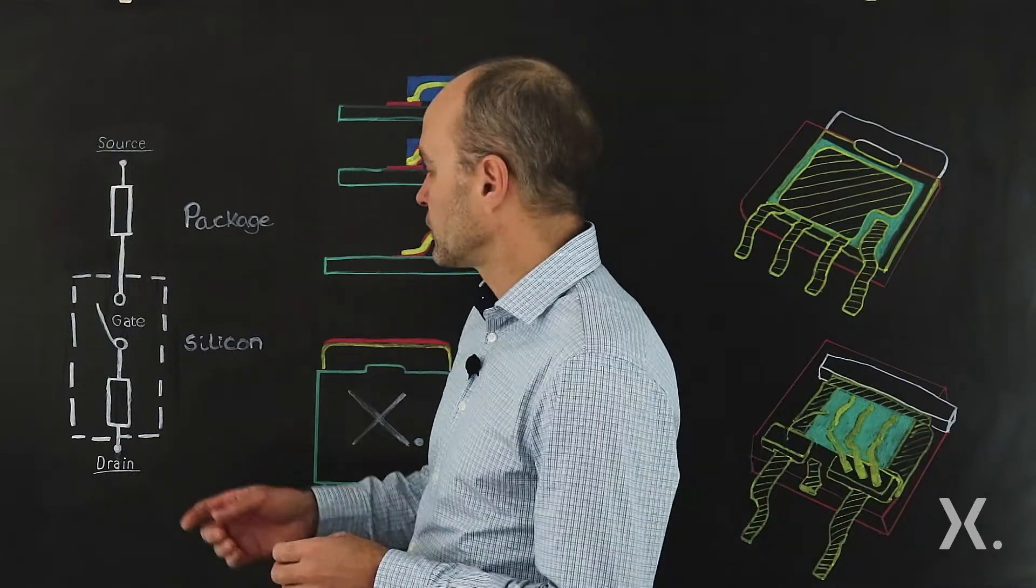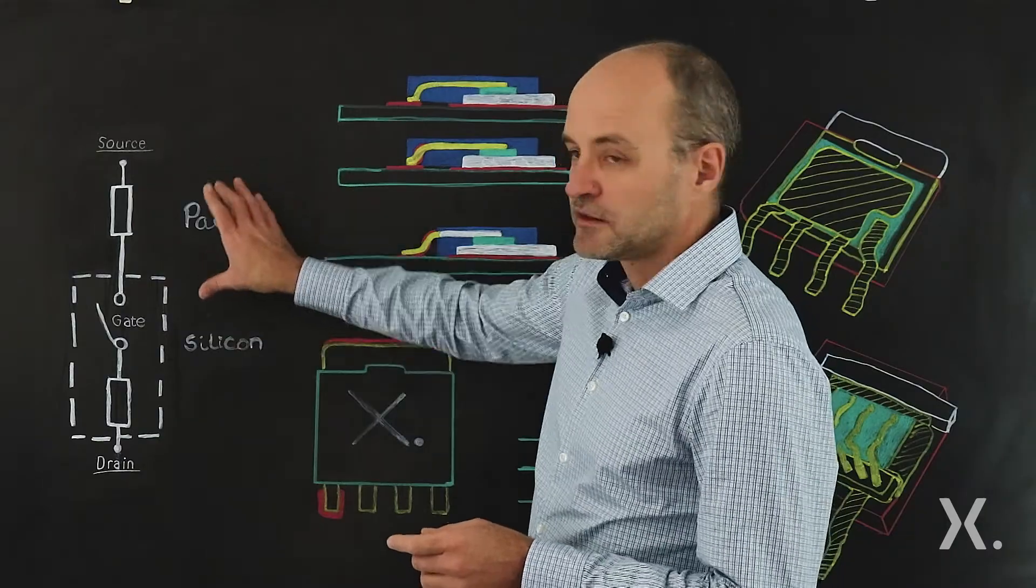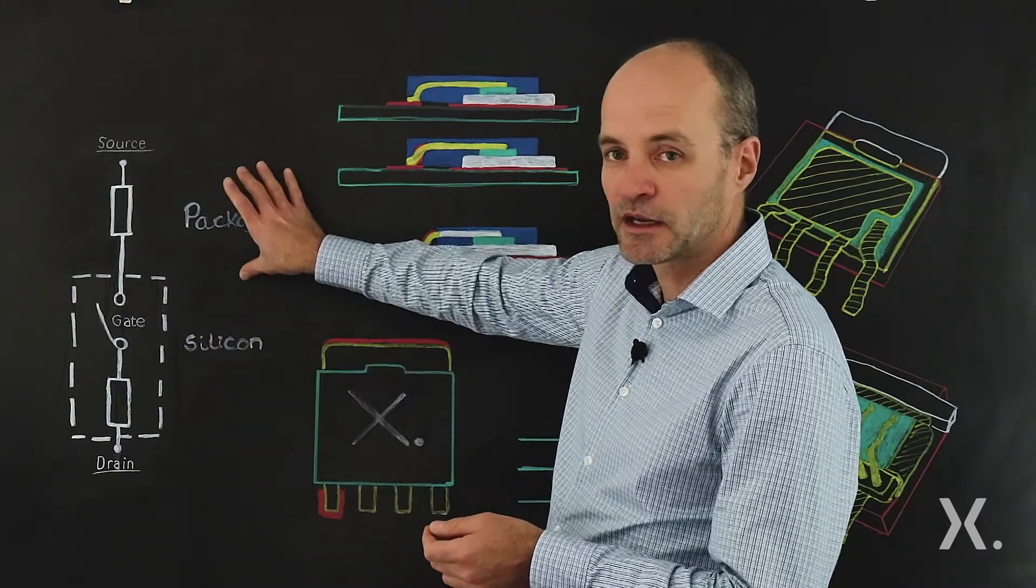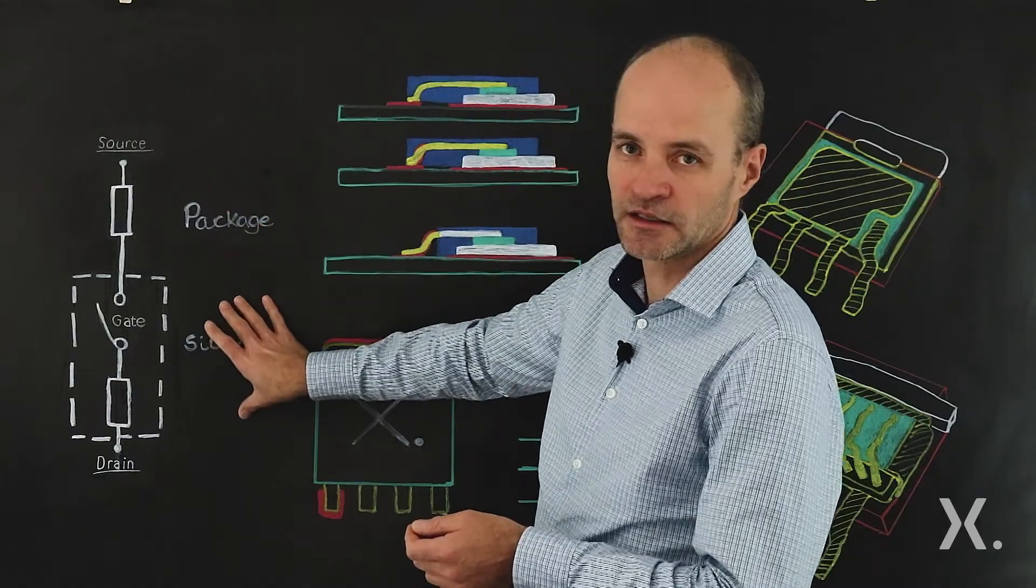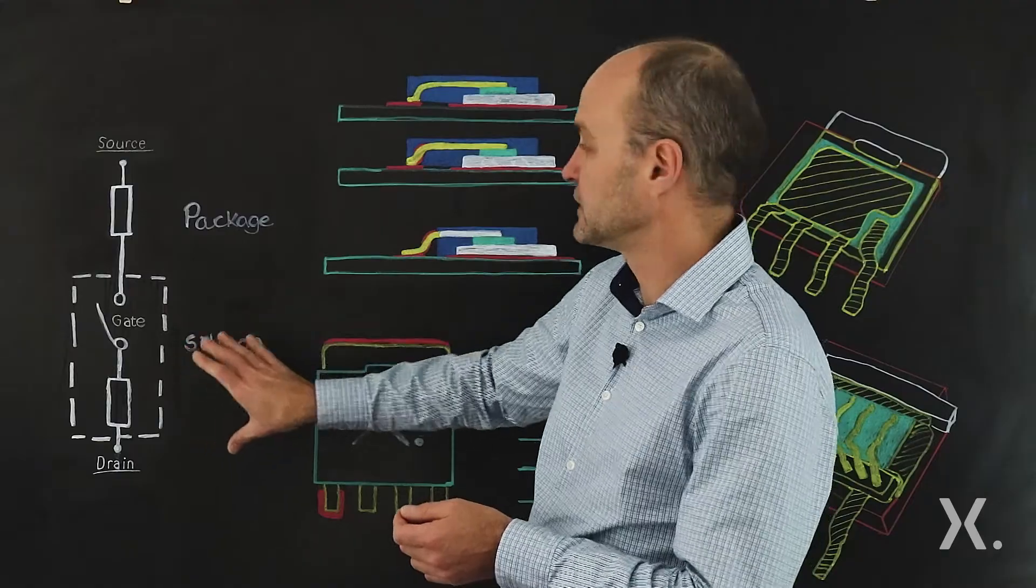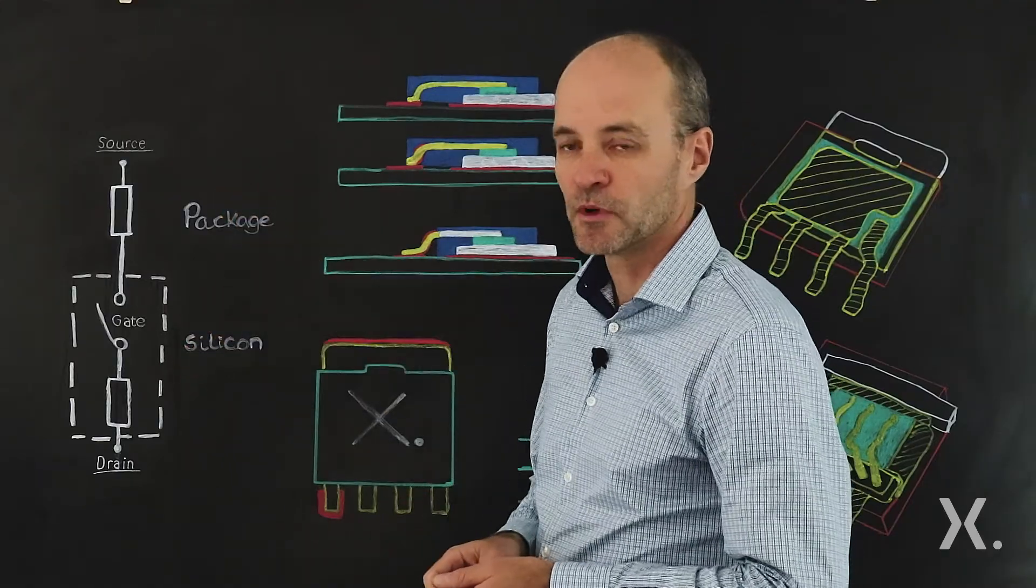If you have a look at this picture on the board there, we can see that the main resistive path of a MOSFET is made up of the package and then the silicon die inside the package. The silicon die contains a switch and the package is really just the carrier for the MOSFET.